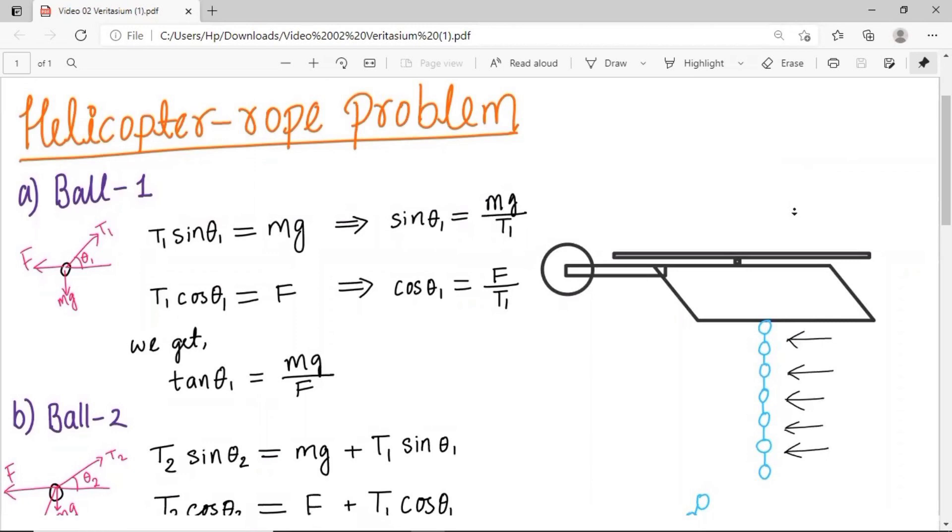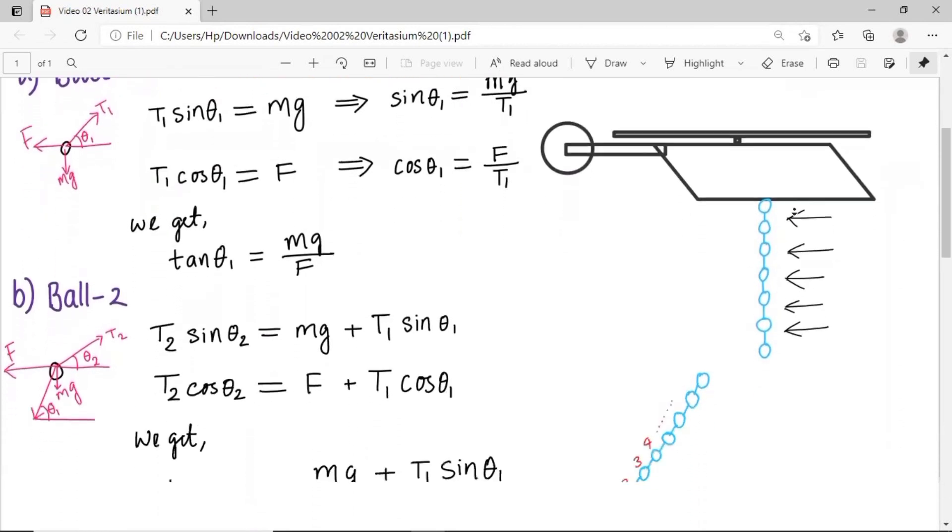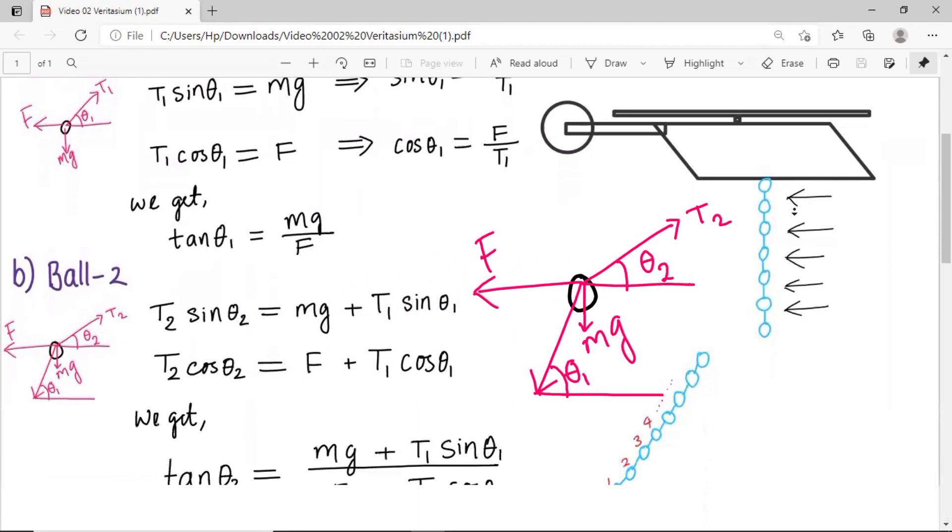Now let's see the second ball from the lower end. The forces acting on this ball are mg downwards, drag force F towards left, tension T₁ in downward left, and tension T₂ in upward right direction but at an angle θ₂ with horizontal.